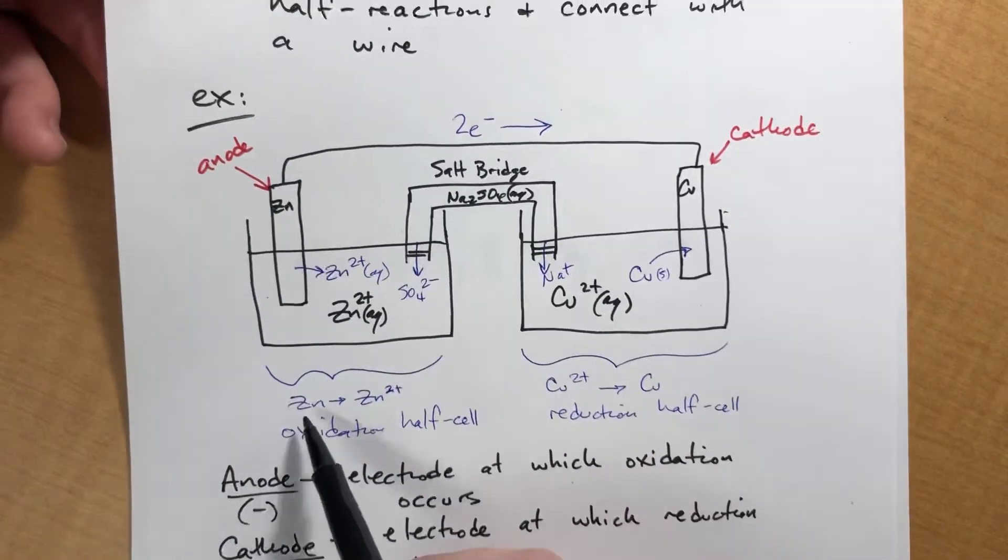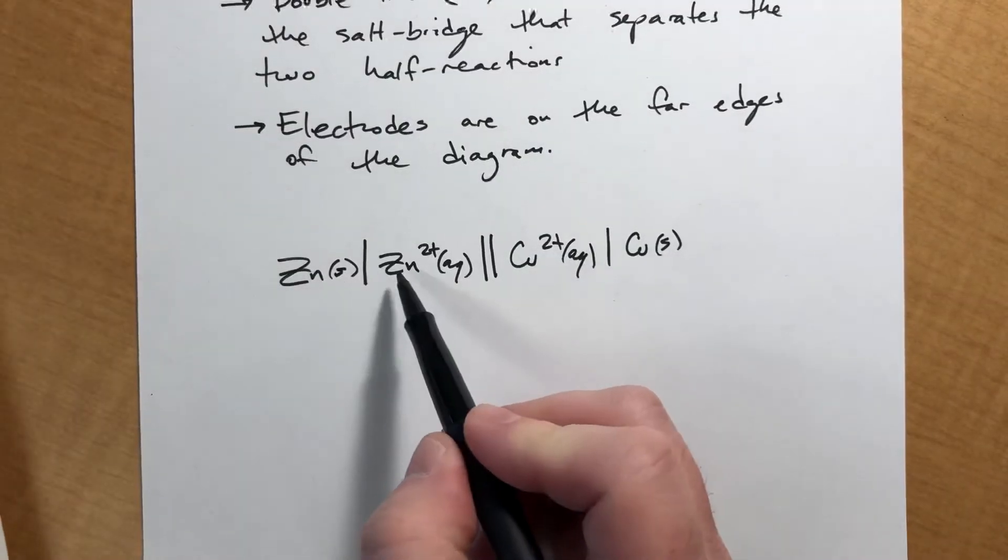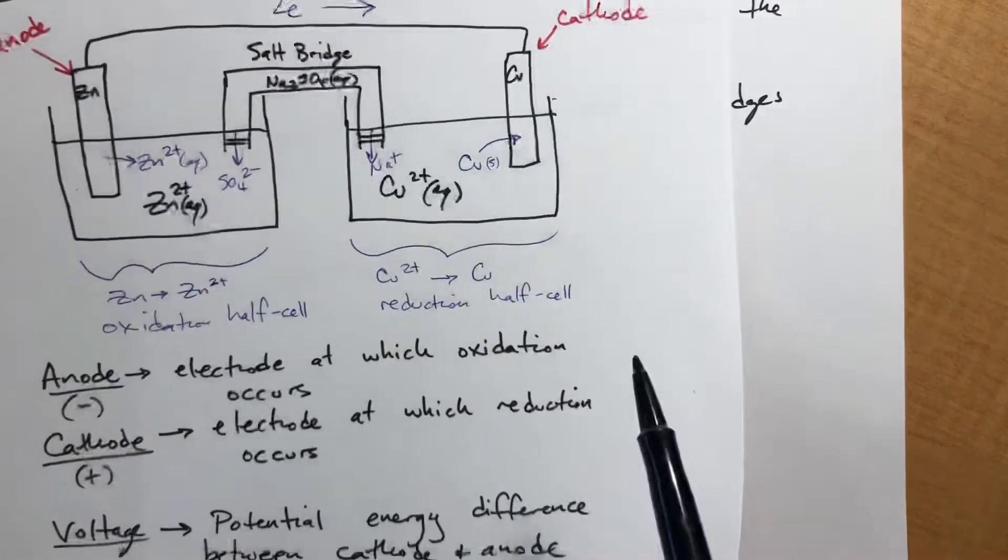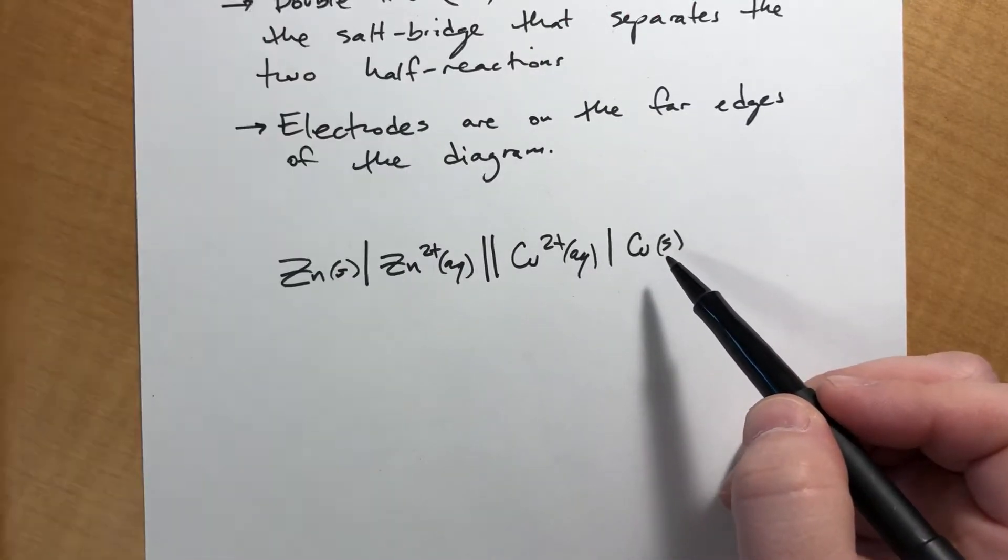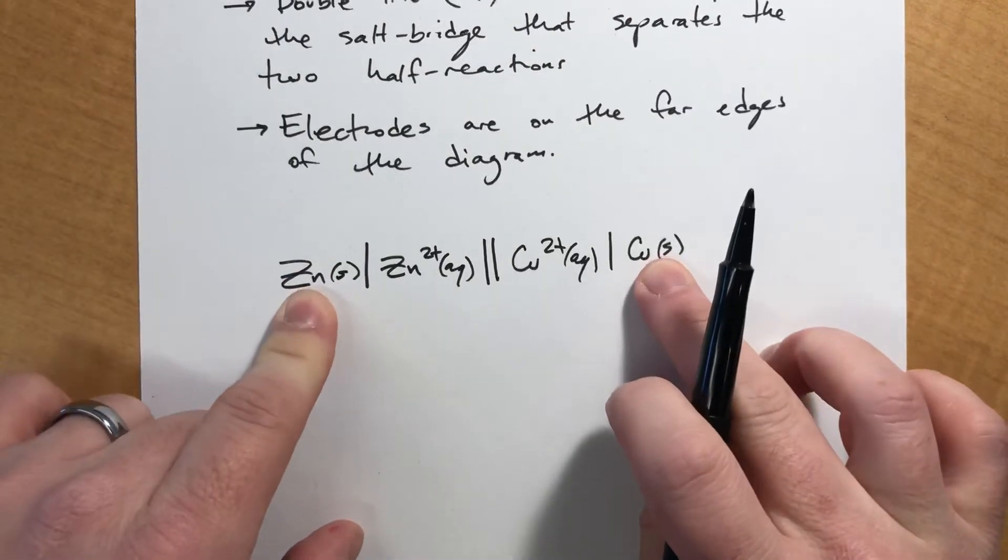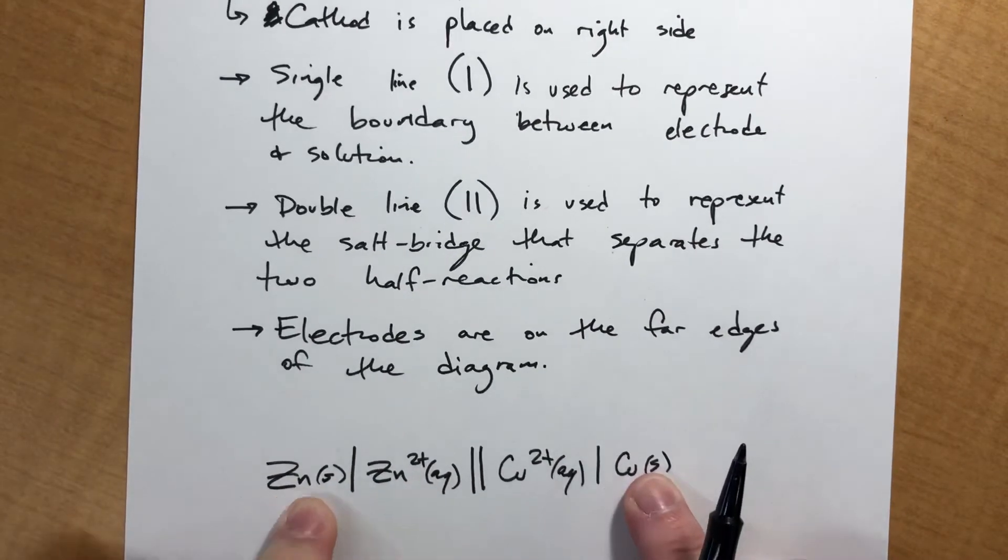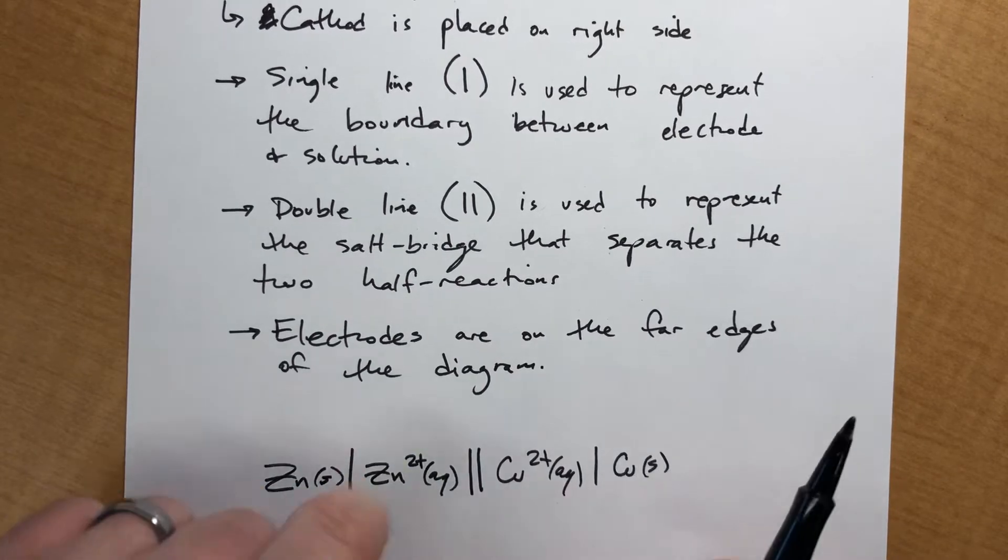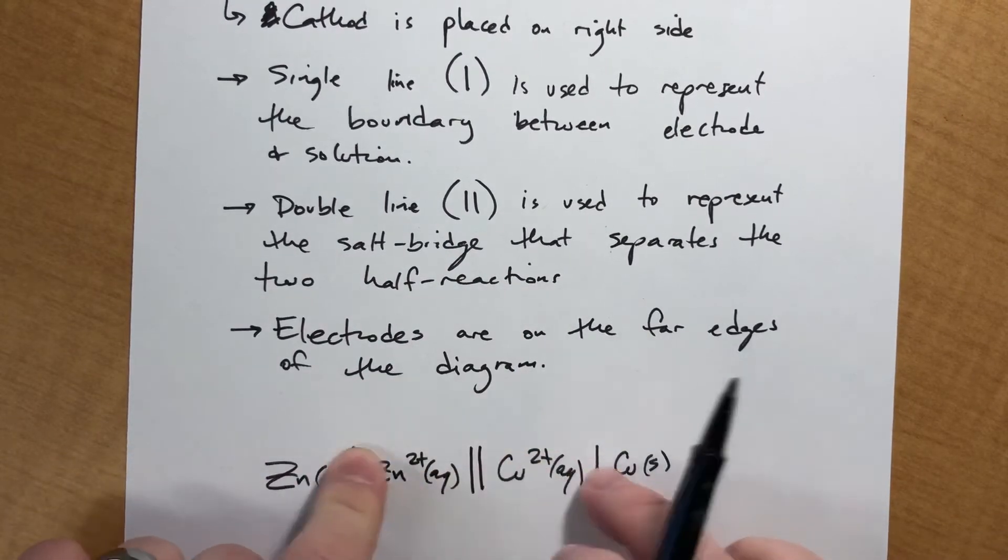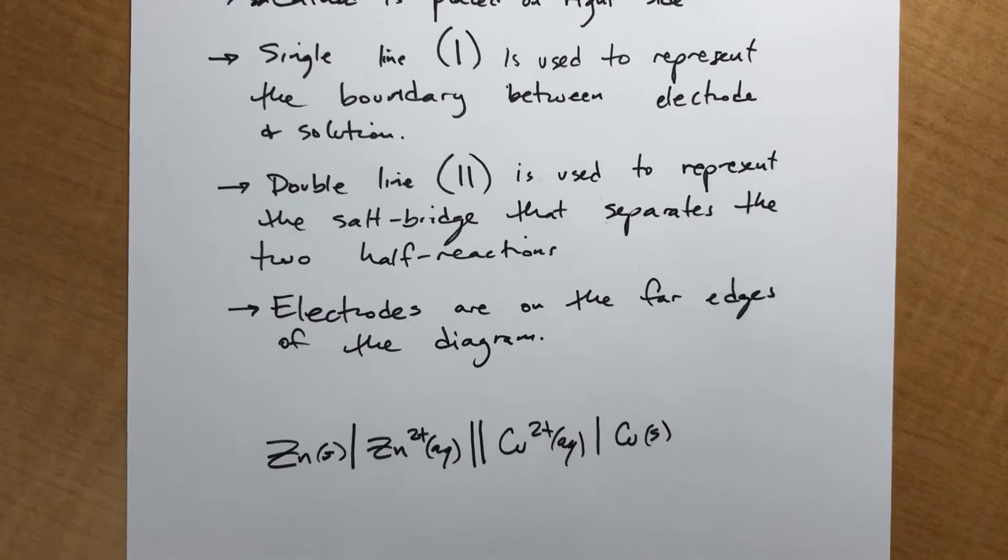On this half of the reaction, it's going from zinc to zinc 2+. On this half reaction, it's going from copper 2+ to copper solid. The electrodes are at the end. We use single lines to separate the electrode and the solution. And then we use a double line to separate the two half reactions.